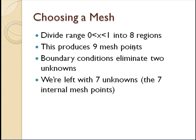This produces 9 mesh points because I have the 2 ends plus the 7 internal points. The boundary conditions tell you the values at the ends. Those are both 0. So we're left with 7 unknowns, which is the 7 internal mesh points. If I write that algebraic equation at those 7 unknowns, then I have 7 equations, 7 unknowns, and then I can deal with the system.